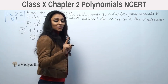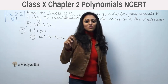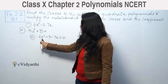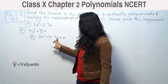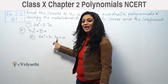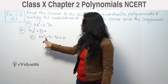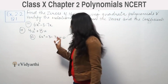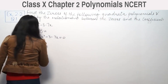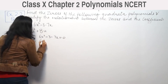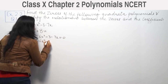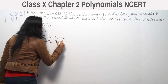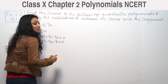In a quadratic equation, we arrange the terms in standard form: first the square term, then the single variable term, then the constant. So we rearrange to get 6x squared minus 7x minus 3 equal to zero.